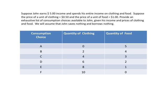Now let us look at another situation. John's income is the same as under BL1 — five dollars — but the price of a unit of clothing has fallen from one dollar to 50 cents, while the price of food stays the same at one dollar. Based on these new financial numbers, we again write down an exhaustive list of consumption choices available to John.